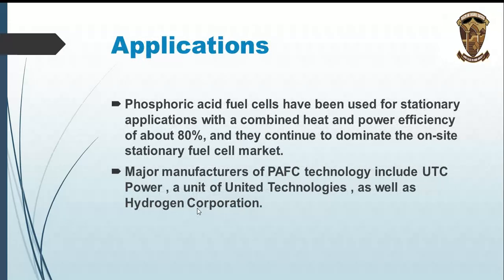Phosphoric acid fuel cells have been used for stationary applications in combined heat and power with efficiency of about 80 percent, and they continue to dominate the on-site stationary fuel cell market. Major manufacturers of phosphoric acid fuel cell technology include UTC Power, a unit of United Technologies, as well as Hydrogen Corporation.